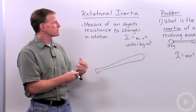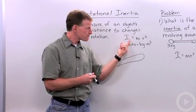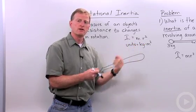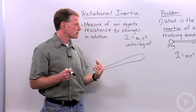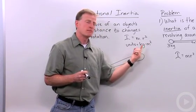The formula we're going to use for rotational inertia is I, that's the symbol for rotational inertia, equals the mass times the radius squared. The longer that radius, the more rotational inertia. The units we're going to use is kilograms times meters squared.